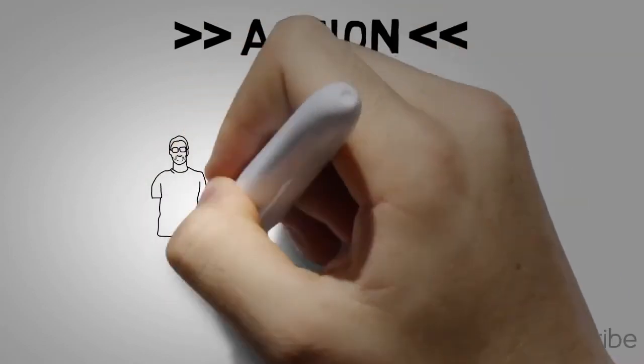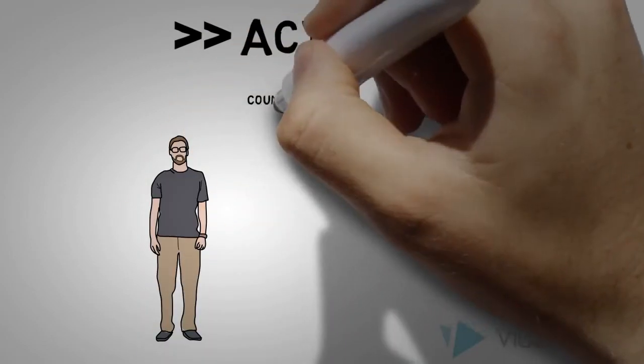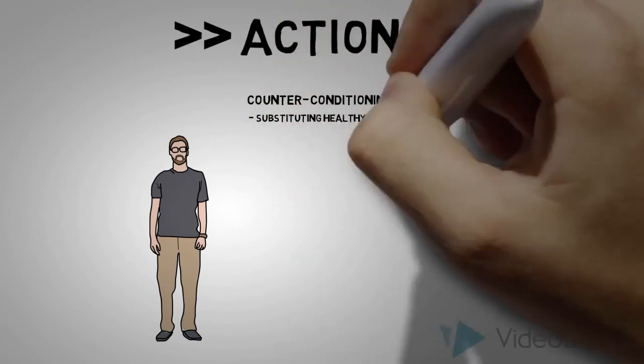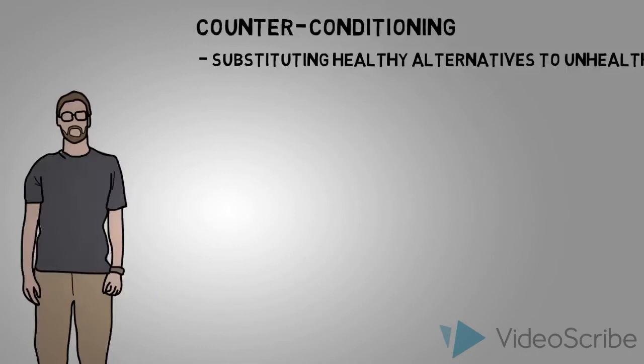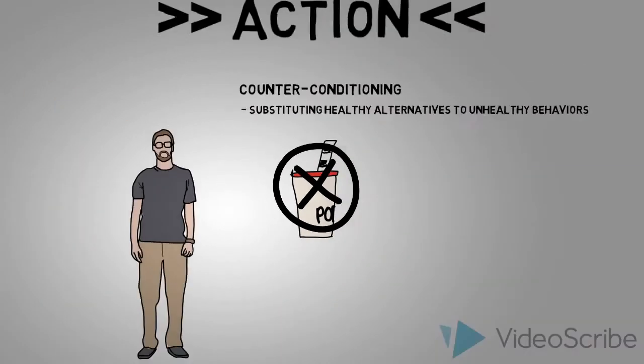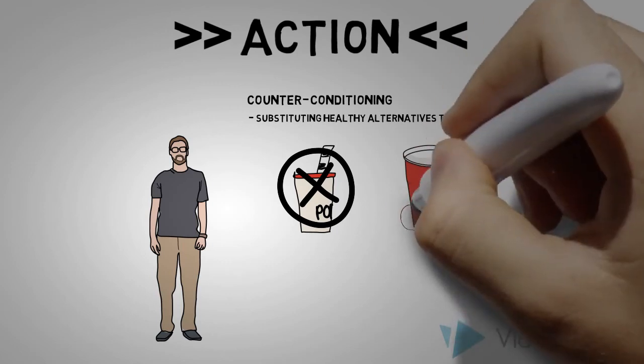Some of the processes or strategies used at this stage can be counter conditioning and reinforcement management. Counter conditioning refers to substituting healthy alternatives to unhealthy behaviors. Instead of having a milkshake like Billy used to do often, he has begun having a smoothie made with fresh fruits.